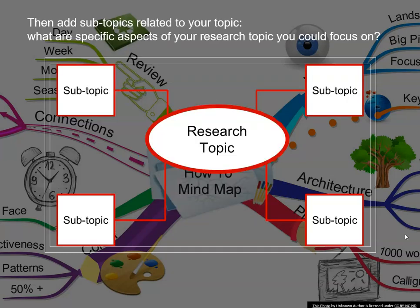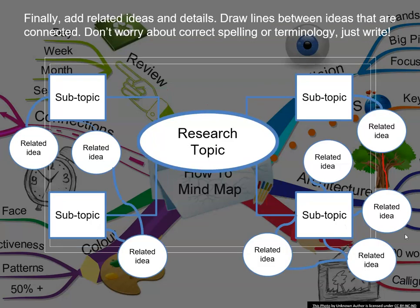Then add any subtopics you came up with when wondering about your topic — questions you can answer or want the answers for. Finally, add related ideas and details. These will flesh out more as you begin to do your research and divide it into categories as you digest it.